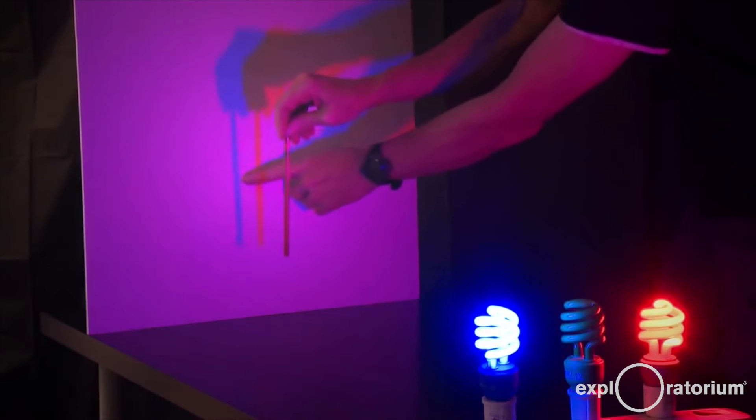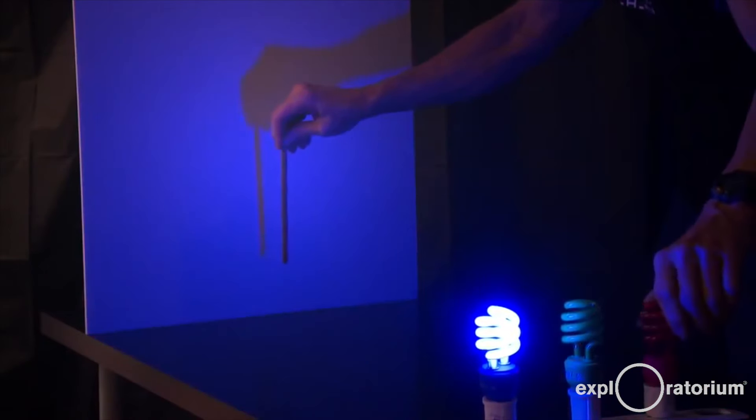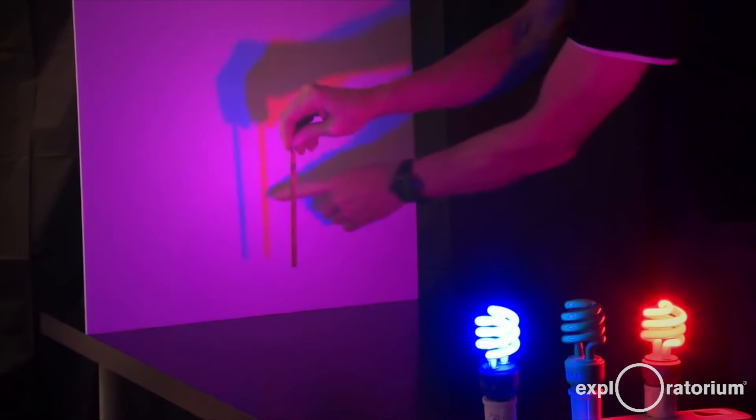The light from the red light makes a shadow here. Watch that shadow as I turn the red light on and off. So this is the shadow of the red light.